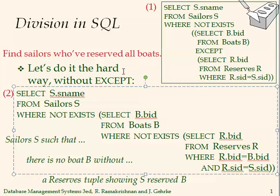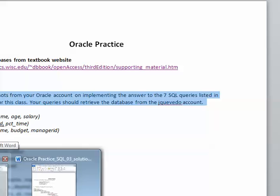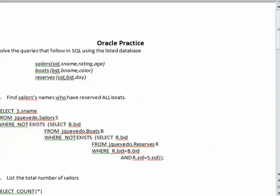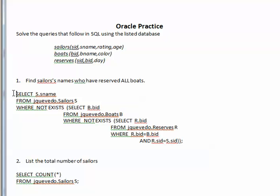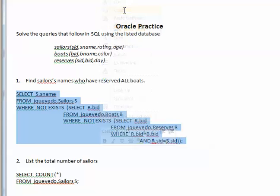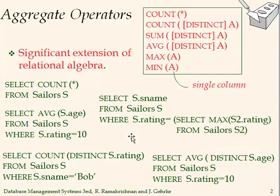For number one — find sailors' names who have reserved all boats — this is the query I want you to practice. I will implement it in our Oracle account and this is the result that I got once I execute it.